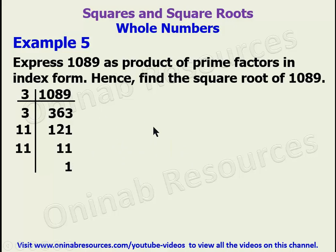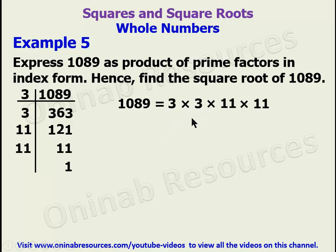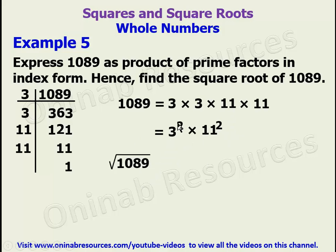So 1089 equals 3 times 3 times 11 times 11. Writing it in index form: that is 3 squared times 11 squared. To find the square root of 1089, we divide each power by 2: the square root of 3 squared is 3, and the square root of 11 squared is 11. Three times 11 gives 33, and that is the square root of 1089. This is the end of the video — until we come your way again, goodbye.